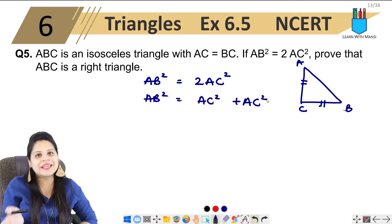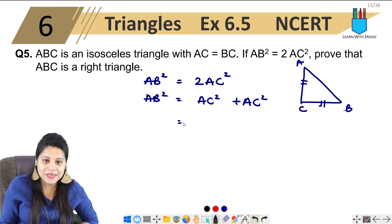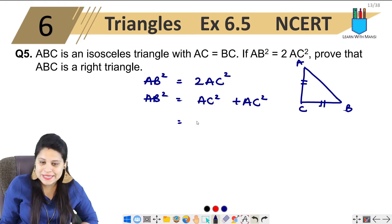It means what we have done in that question, we have to reverse it. So AC square plus AC square means AC equal to BC.